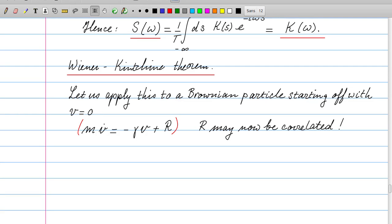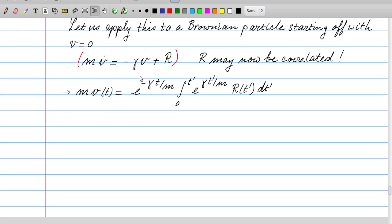We now apply this Wiener-Kinchen theorem to a Brownian particle which starts off with zero velocity. Well, this particle obeys the following equation of motion. The force is a drag and it's a random force. And usually you assume that the random force does not have any correlations in time, but we allow that force now to have such correlations. The solution to this equation was addressed in the movie on the Langevin equation, and the analysis is exactly the same here.